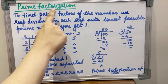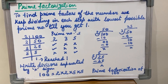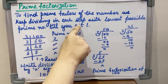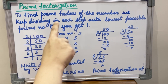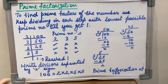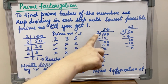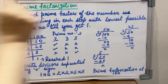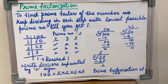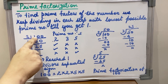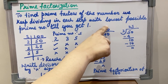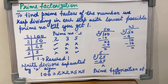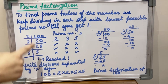Now how to do prime factorization? To find prime factors of a number, we keep dividing in each step with the lowest possible prime number until we get 1. In division we keep the number inside and the divisor outside, and the quotient comes here. When we do prime factorization, we write the number here; the quotient comes below and the divisor is kept outside. So this is continuous division we are doing.